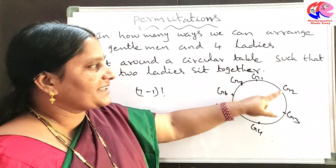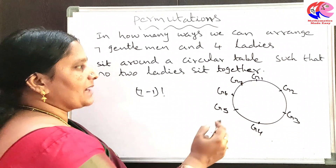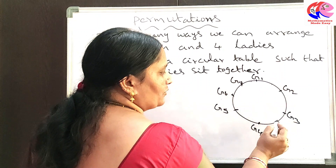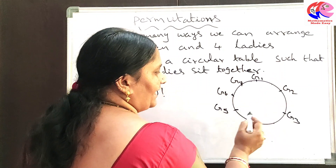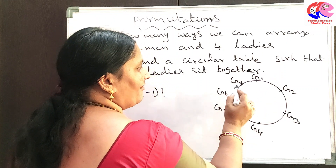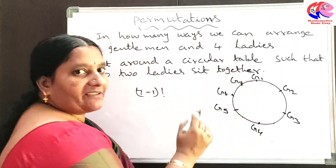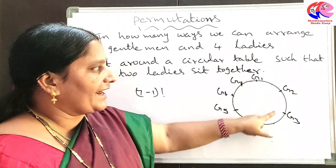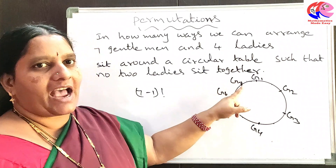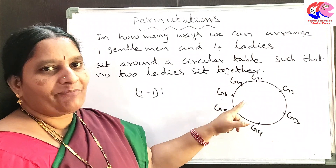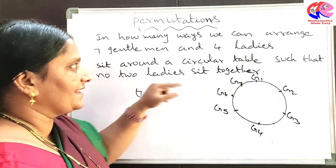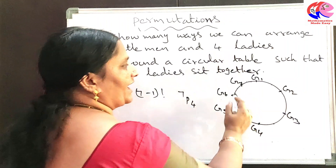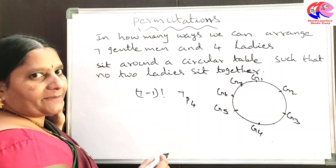Now we have to arrange 4 ladies in the gaps between the gentlemen. The gaps are: gap 1, gap 2, 3, 4, 5, 6, 7 — so there are 7 gaps. We can arrange 4 ladies in 7 gaps in 7P4 ways.